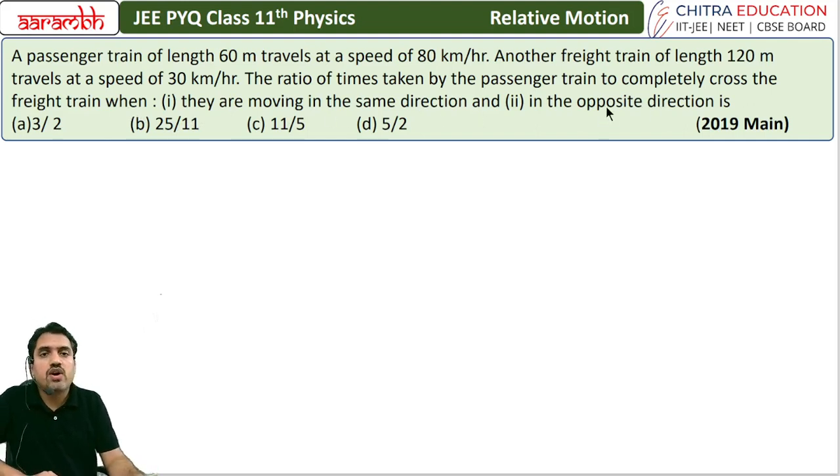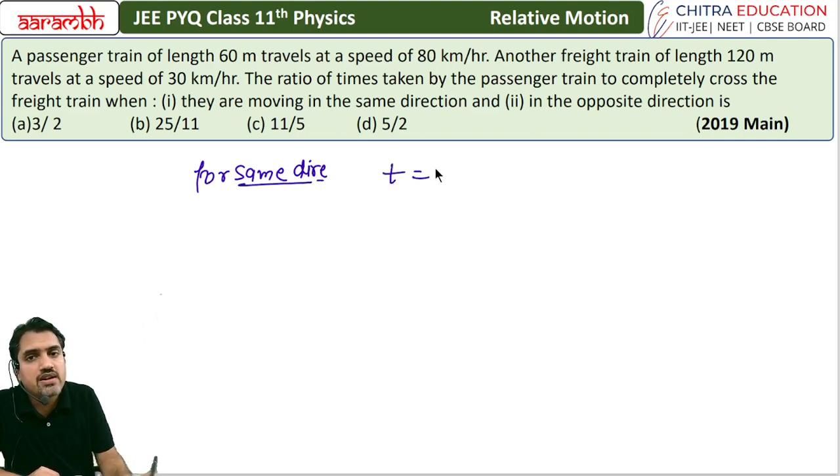Let's talk about same direction. For same direction, time will be relative displacement - both trains' length l1 plus l2 - divided by relative velocity. In same direction we have to subtract velocities, meaning 80 minus 30.